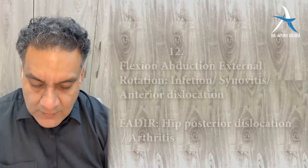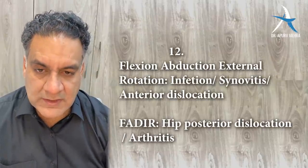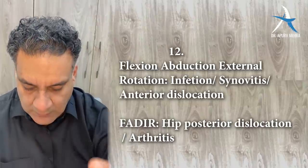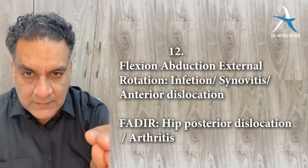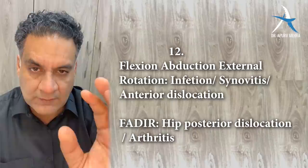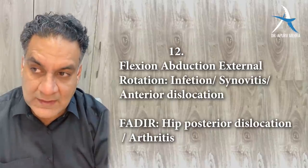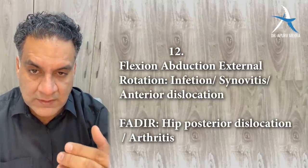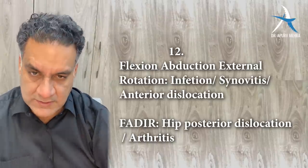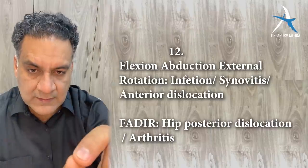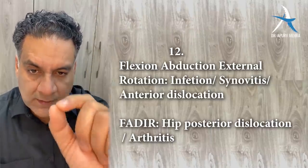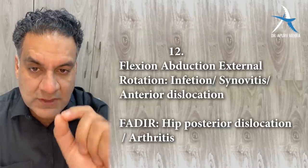Point number twelve: flexion, abduction and external rotation — FABER — is seen in synovitis of the hip joint or infections, and also in anterior dislocation of the hip joint. Whereas flexion, adduction, internal rotation is seen in arthritis involving the hip joint or posterior dislocation of the hip. Remember: hip dislocates posteriorly more commonly.